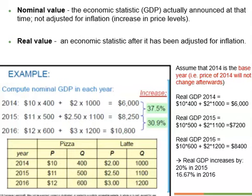In this example, taking 2014 as the base year and using 2014 price levels to calculate real GDP: for real GDP in 2015, we take 2014 price levels times 2015 quantity levels. We get $7,200 — only a 20% increase from real GDP in 2014, instead of the 37.5% suggested by nominal GDP values.